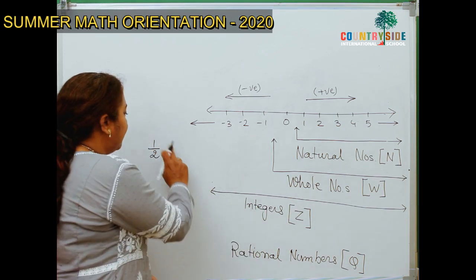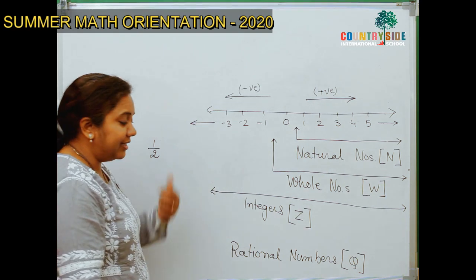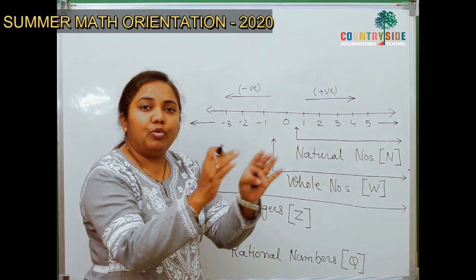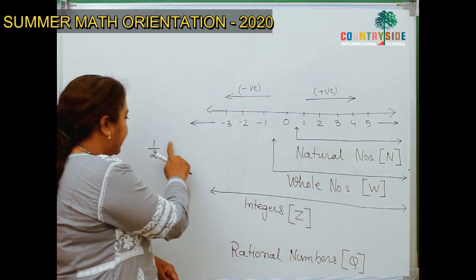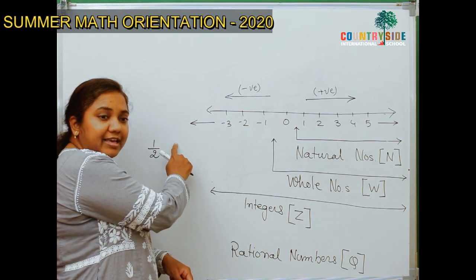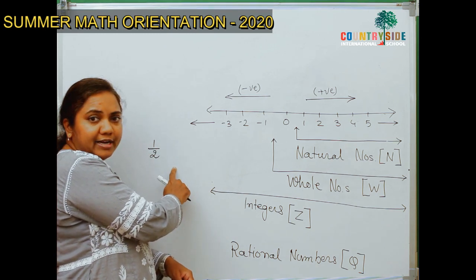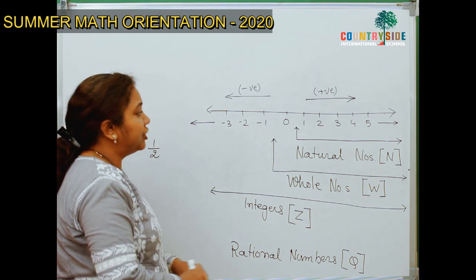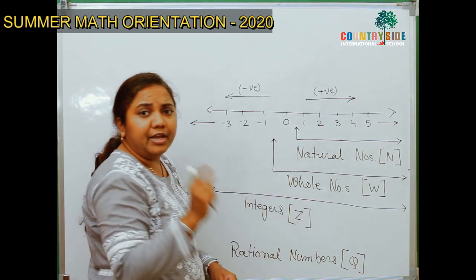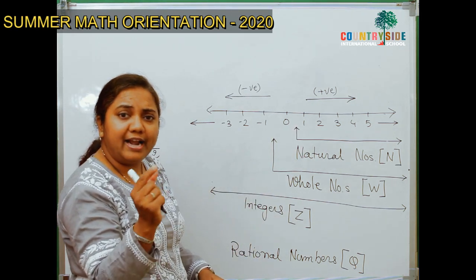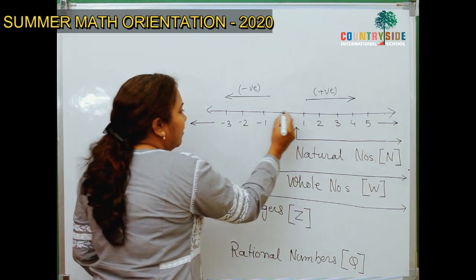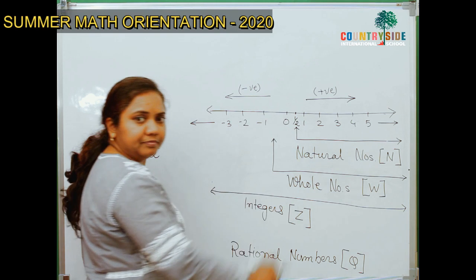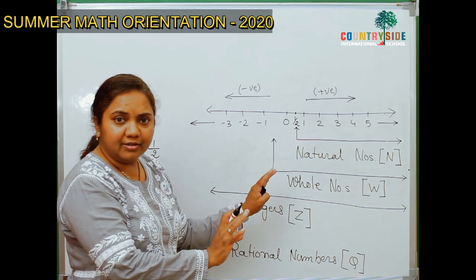For example, 1 by 2. What does it indicate? I have taken one part from total two parts. Right? And, as numerator is less than the denominator, it is a proper fraction. And, proper fraction always comes in between 0 and 1. So, 1 by 2 will be placed somewhere over here. Understood? Yes.